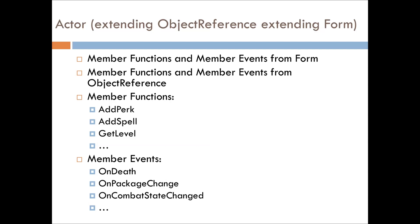Now that we've looked at this example: ObjectReference can use anything from Form, but not anything from Actor. Actor can use stuff from both ObjectReference and Form, because ObjectReference has a link to Form. There are some exceptions — if you know that the script extending ObjectReference is being added to an Actor. But as I've stated in other videos, it's not a good practice to go on this assumption when working with these scripts.